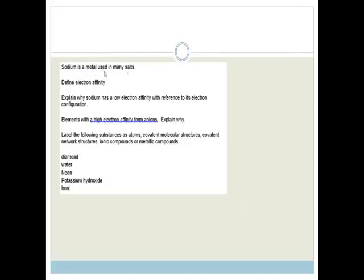Sodium is a metal used in many salts. Define electron affinity. Electron affinity is basically, you guys need to go learn the definitions properly, but basically it is the attraction of electrons to the nucleus of an atom. In other words, it's how strongly it attracts atoms.